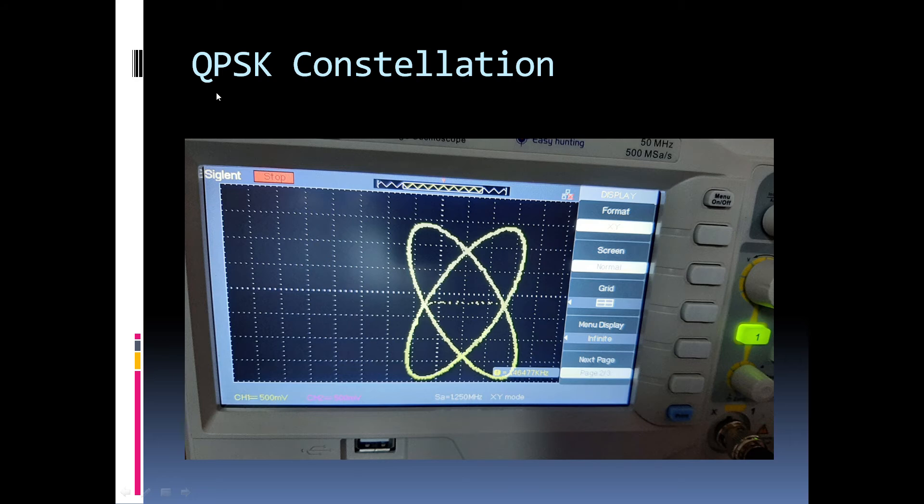So, here we can see the constellation diagram of QPSK modulation. And for this, we have to keep our oscilloscope display in XY mode. And channel 1 input will be your I channel modulated signal and channel 2 is a Q channel modulated signal. And we can see the transition from one state to another. Actually, there will be four different states which can be formed from group of 2-bit encoding.